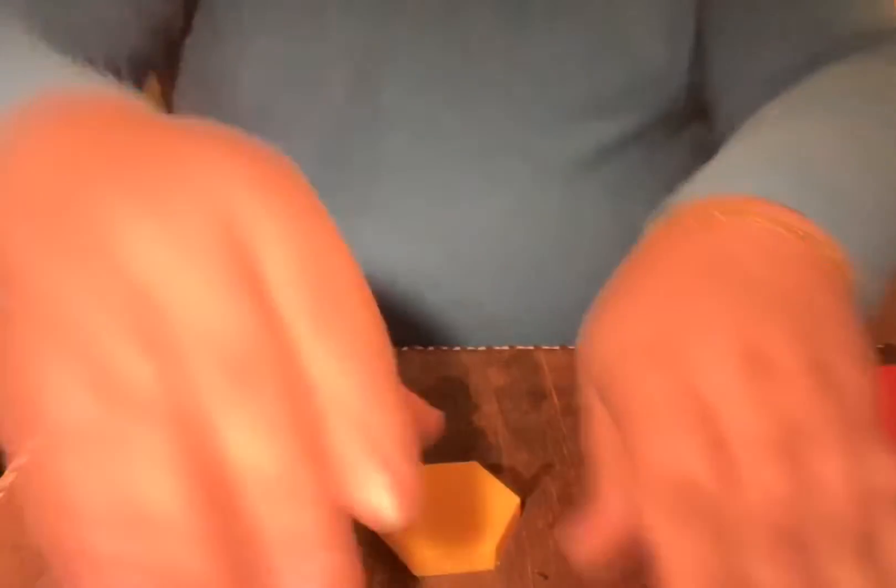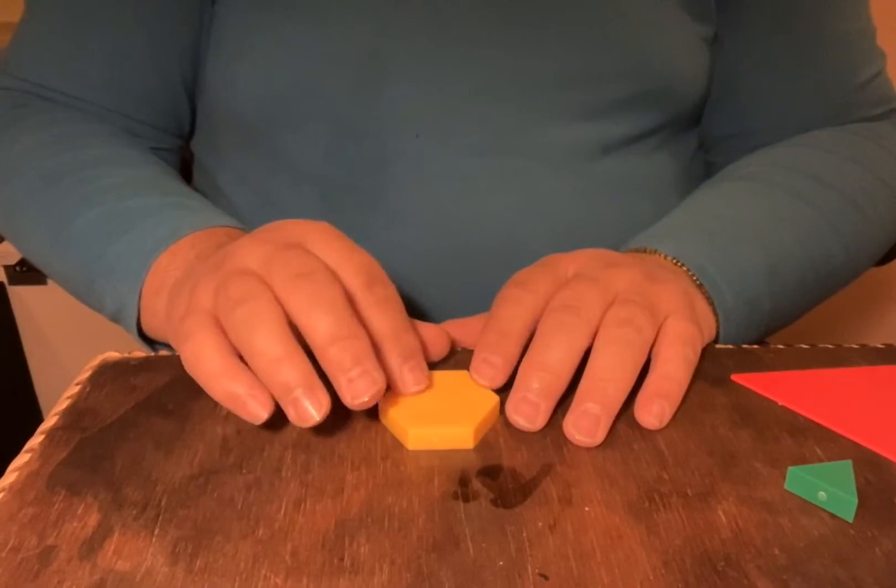So our activity today is to focus on making a big triangle and another copy of the hexagon from the pattern blocks using these shapes that we have here. We're going to start with the hexagon. The hexagon is very easy, so I'm going to bring my camera down so that you can see what we're going to do.